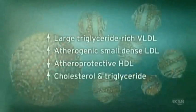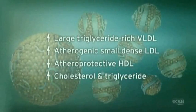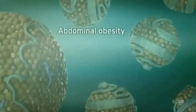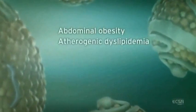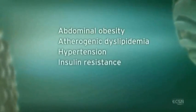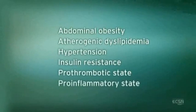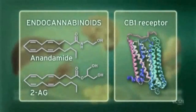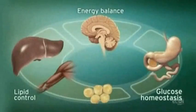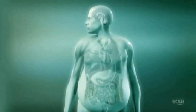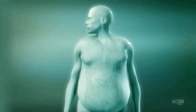Metabolic dysregulation leads to a constellation of symptoms including abdominal obesity, atherogenic dyslipidemia, hypertension, insulin resistance, prothrombotic state, and pro-inflammatory state. As basic and clinical research progresses, we will continue to increase our understanding of the central and peripheral endocannabinoid system and its role in the regulation of metabolic function.